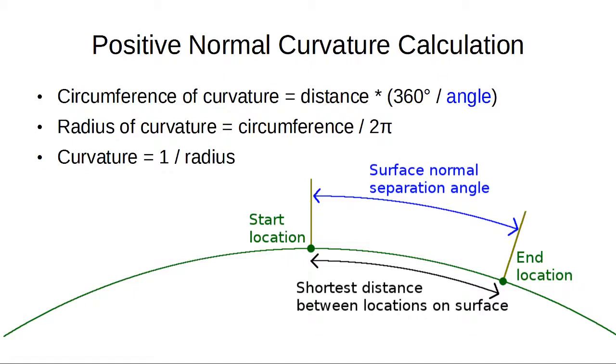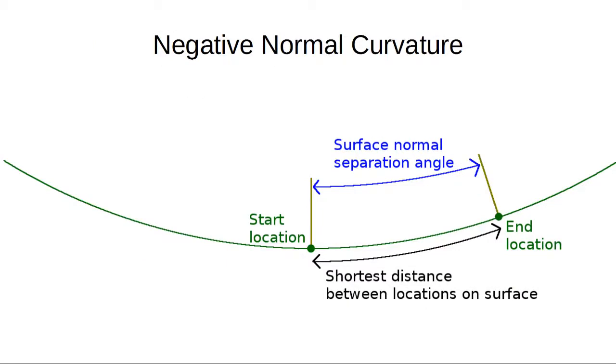In the simple case, we have what's called positive normal curvature. To calculate that, we simply calculate the angle through which the surface normal was rotated, determine what part of a circle that is, and multiply by the distance to get the circumference of curvature. The radius of curvature is then the circumference divided by 2pi, and the curvature itself is 1 over the radius. If the angle is 0, that means the surface is flat. There's no normal curvature. It's also possible to have negative normal curvature, which is what happens when, as you travel along the surface, your feet move faster than your head.